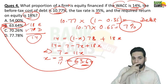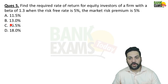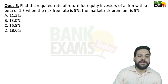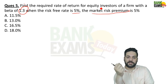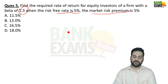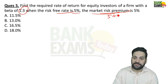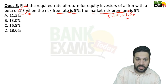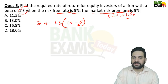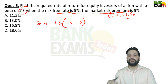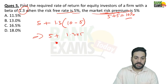Question 5: Find the required rate of return for equity investors of a firm with beta 1.3, risk-free return 5%, and market risk premium 5%. The small trick here: the market risk premium is 5%, so the expected market return = 5% + 5% = 10%. Now apply CAPM: 5 + 1.3 × (10 − 5) = 5 + 6.5 = 11.5%. The answer is 11.5%.